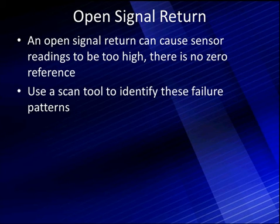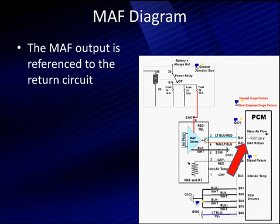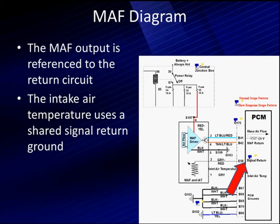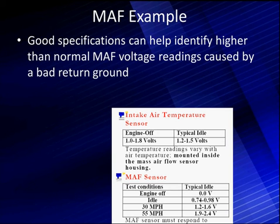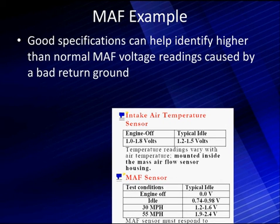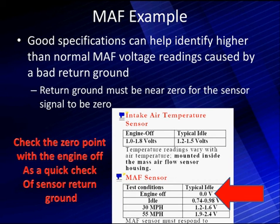An open signal return is going to cause sensor readings to be too high — there is no zero reference. Use the scan tool to identify these. MAF output is referenced to sensor return; you can see the MAF input airflow above and the MAF return below it. The intake air temperature uses a shared signal return as well — different than the MAF: E58 for the signal return, B42 for the mass airflow return. High ground voltage readings for the sensor will cause an increase in voltage signal — the readings will be too high. What we're looking for is bad readings caused by a bad return; if the return is bad, we cannot get a near-zero or zero-volt reading in scan data without having a good ground.